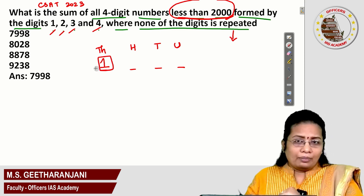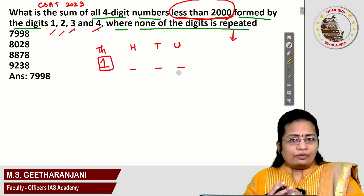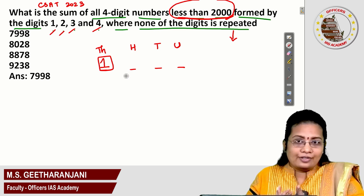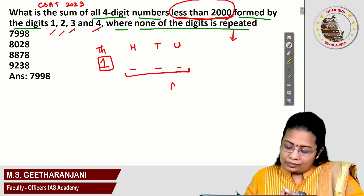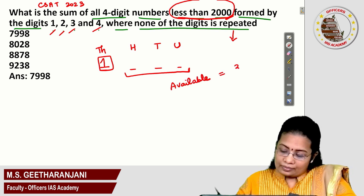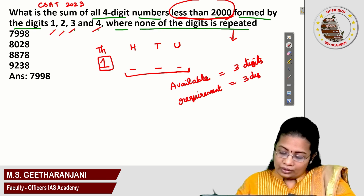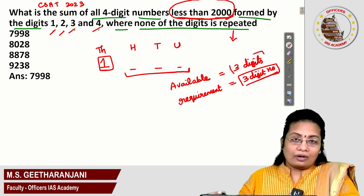For the other three places you can arrange 2, 3, and 4 in different ways — such as 2,3,4 or 2,4,3 or 3,2,4 and so on. So the available three digits are 2, 3 and 4, and the requirement is also a three-digit arrangement. To make a three-digit arrangement, three different digits are available.